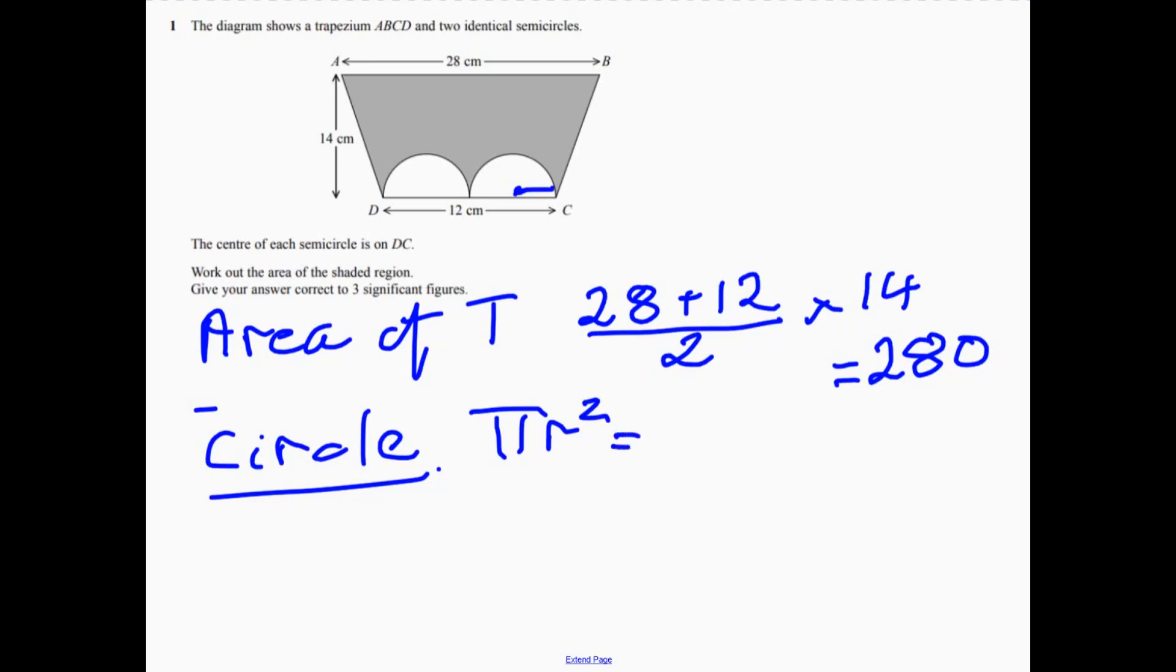So the area of the circle is pi times 3 squared. And if you work that out, that should come to 28.27 and then a little bit more.